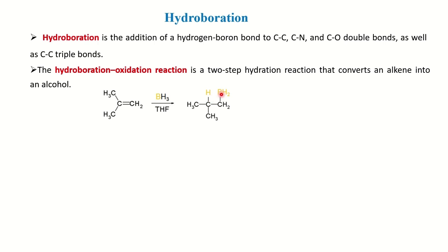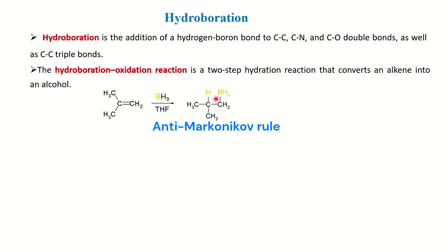If you write BH3 as H–BH2, then addition of hydrogen and BH2 to the double bond takes place. The question is where hydrogen adds and where BH2 adds. It follows Markovnikov's rule: hydrogen adds to the more substituted carbon — where we have two methyl groups — and BH2, being bulky, adds to the terminal carbon. Then followed by H2O2 in the presence of NaOH, the BH2 converts into OH.